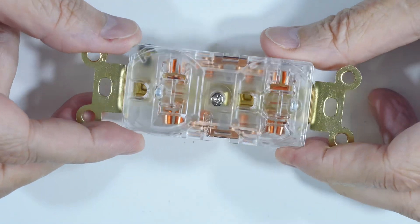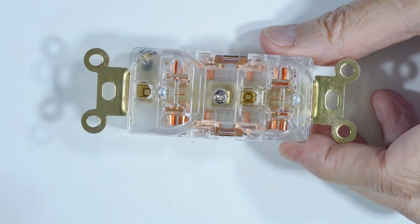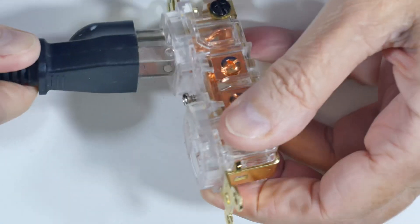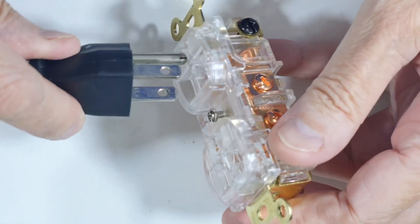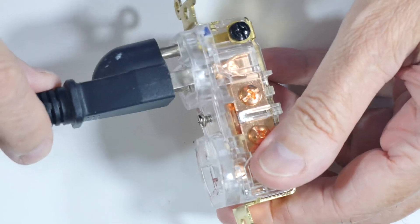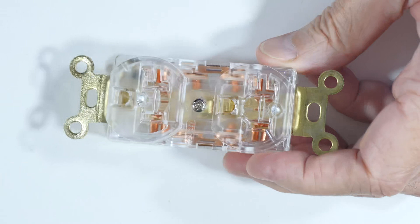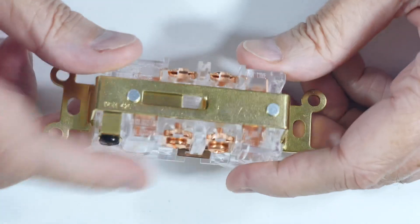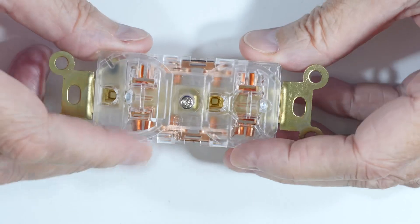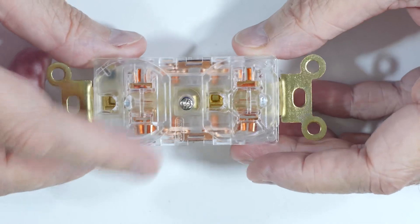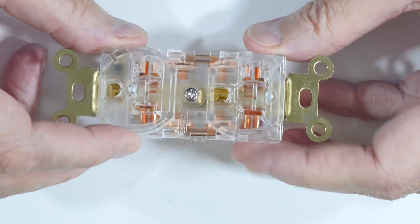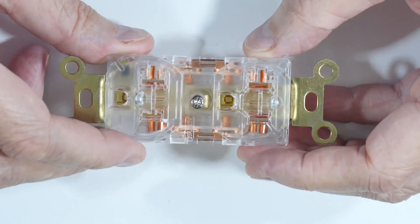This is a standard American plug. It uses this type of male end with the flat blades and the round ground. This is kind of different. This is clear and it's got some really heavy-duty copper insides. It's supposed to give less RF noise for your stereo equipment. But that's not what we're going to talk about today.